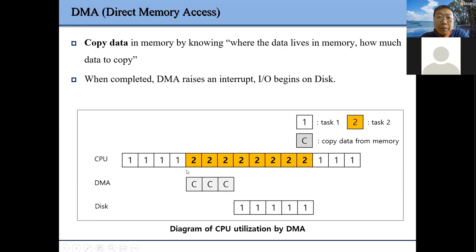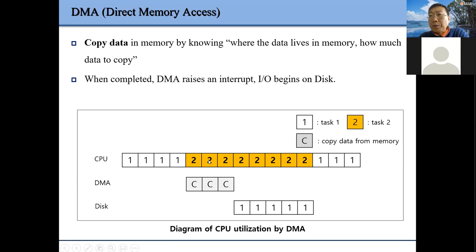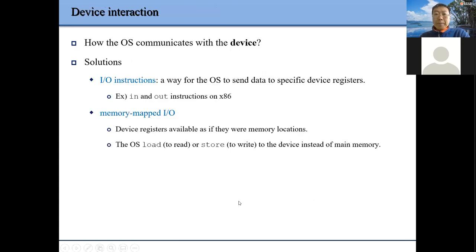As illustrated in the figure, after we set up the IO commands telling DMA which device to transfer to, what the size and address are, we can switch to another process while DMA helps transfer data between memory and the IO device.